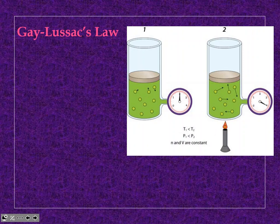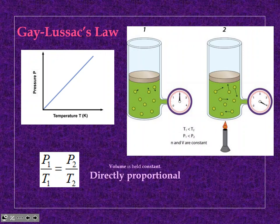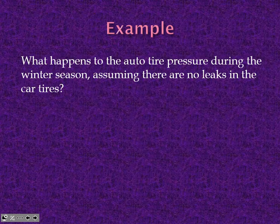Gay-Lussac's Law: pressure and temperature are directly proportional, with volume held constant. The graph shows a nice linear relationship. For Boyle's, Charles', and Gay-Lussac's: in each law, two variables are changing and one is held constant. For example, what happens to auto tire pressure during the winter, assuming no leaks? The pressure is going to decrease in the wintertime, and in the summer when it gets warm, it goes back up. There's usually about a four-point PSI swing between seasons.